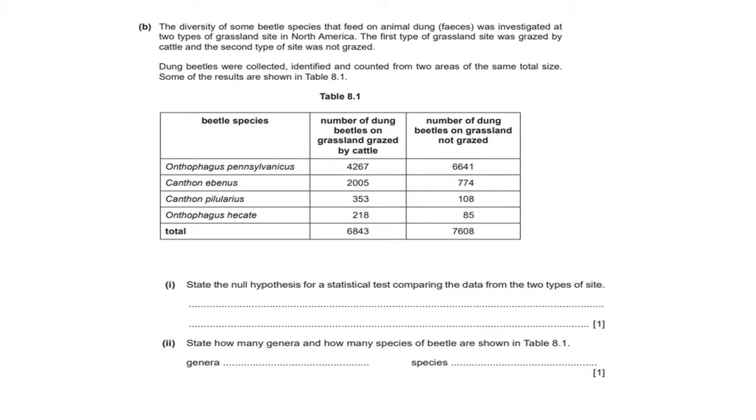So here we go. We have these four different species over here and these are the numbers that we counted on grazed land and on ungrazed land. And for those of you who might not know when we say grazed it simply means where cows go to feed. So it's like a feeding ground for cows.